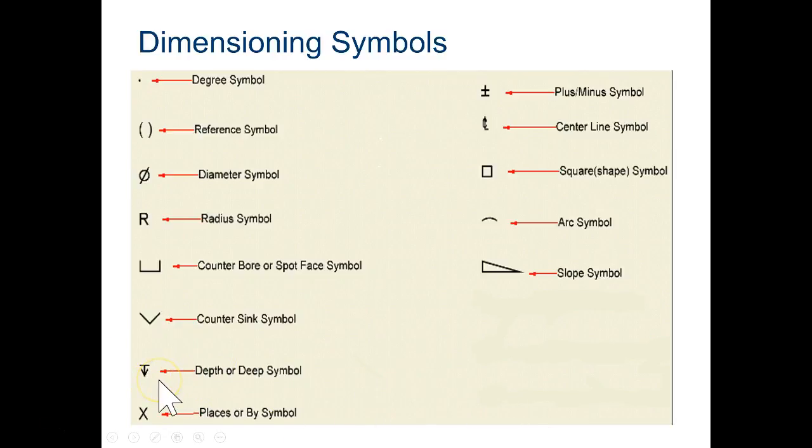This symbol is for depth. So if you have a hole, you have to describe how deep it's going to go. The X tells you that there's several parts or several features on this part that are exactly the same. We've dimensioned it here and you have multiple. So if you see something that looks like this, it's exactly like this.